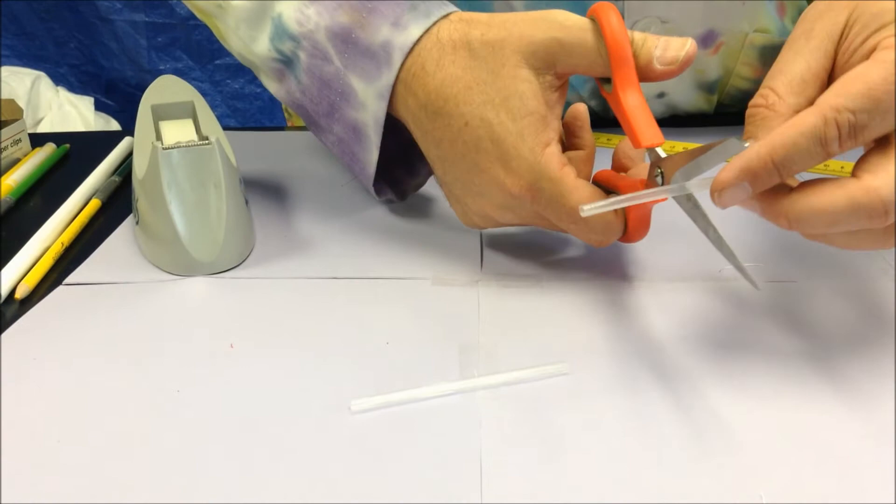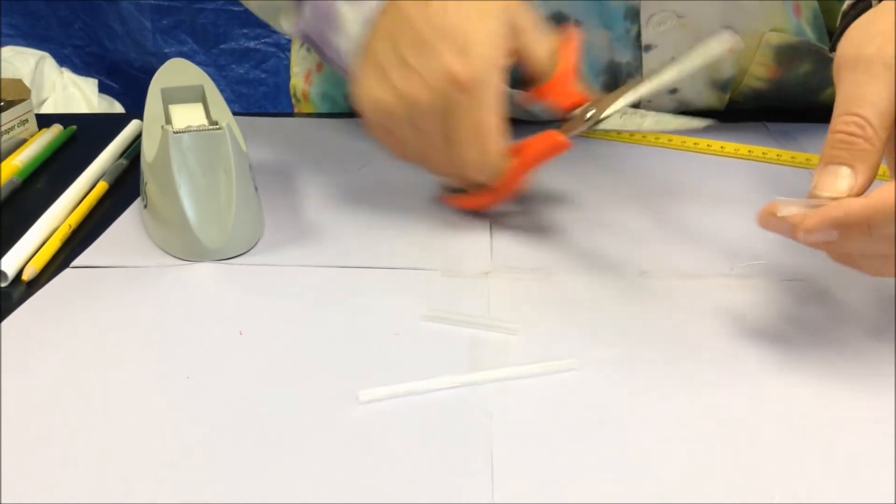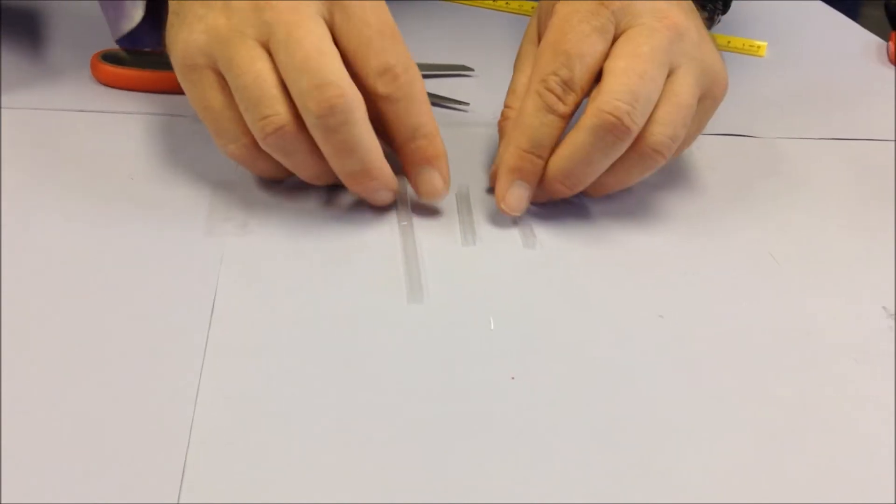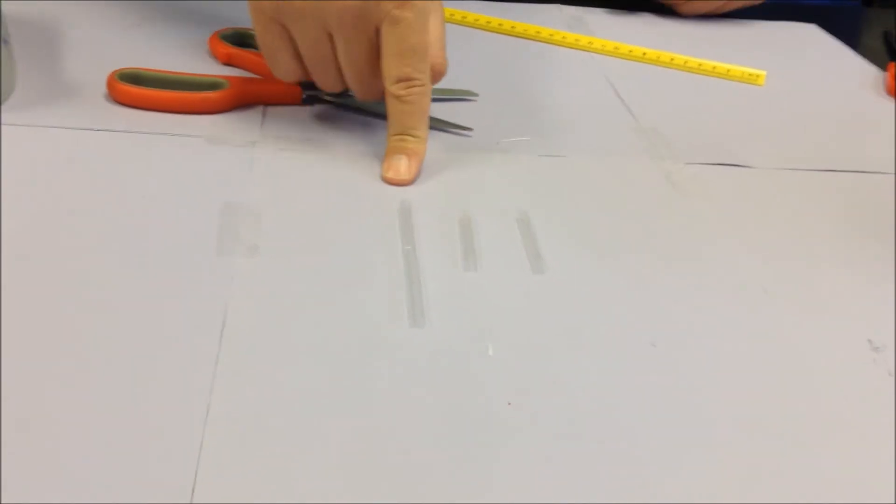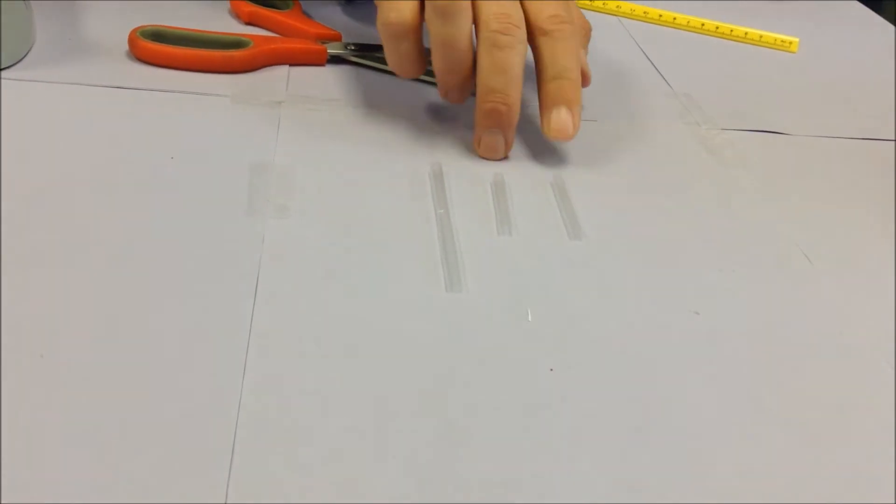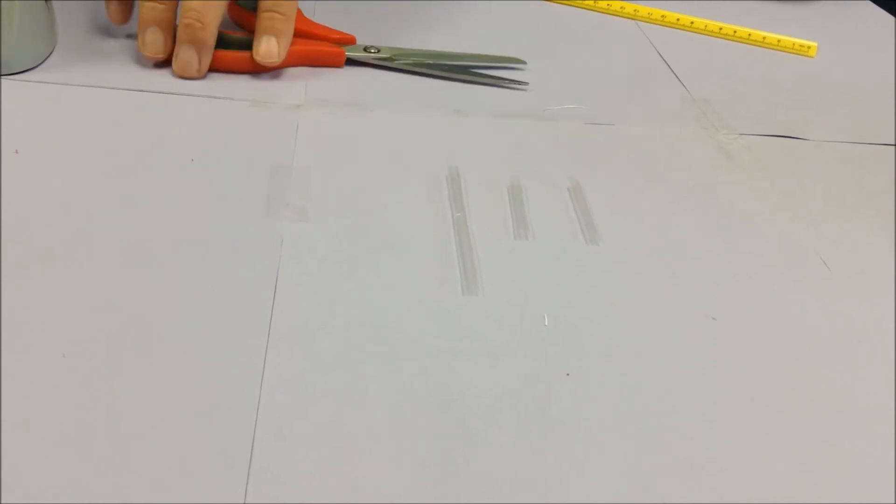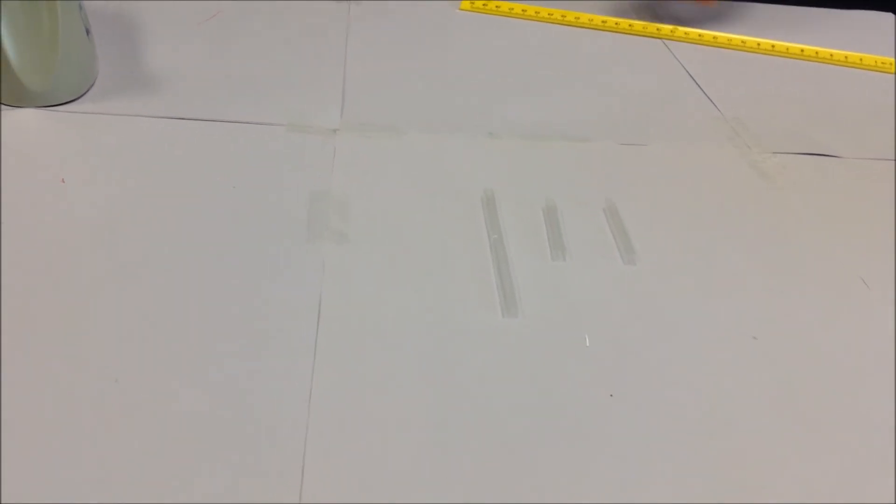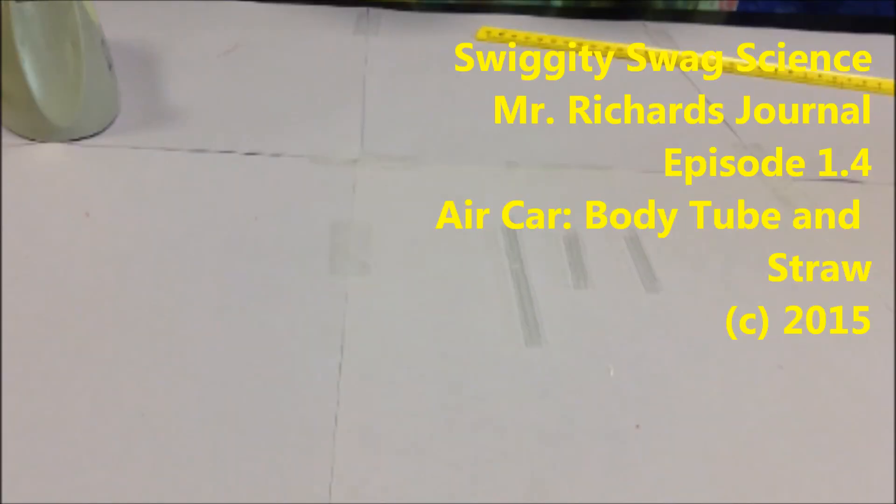Next, cut one of the halves into half again, and now you have three pieces. The longest piece is going to be for your rear axle, and then the two shorter ones, one's going to be for your front wheel axle and the other will be for your outer axle. In our next episode, we'll take a look at how to straighten paper clips. Hope to see you then.